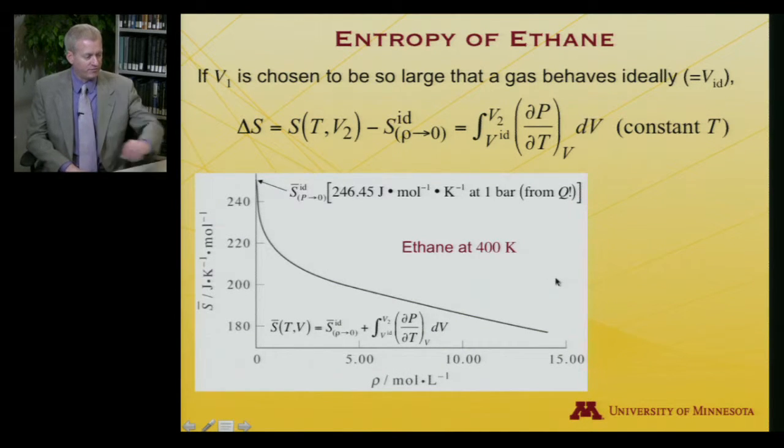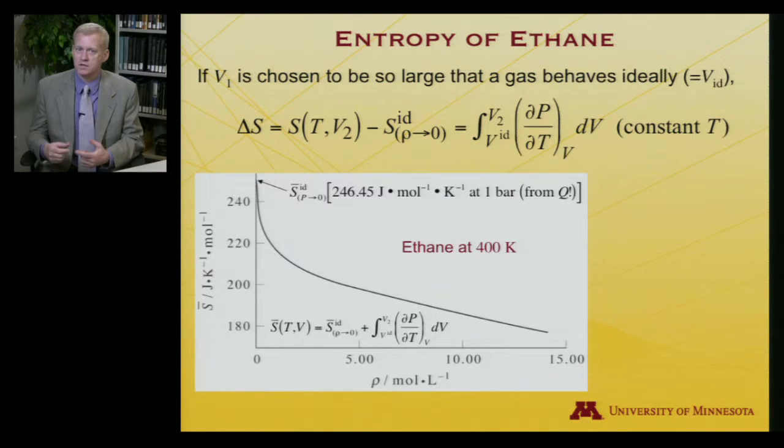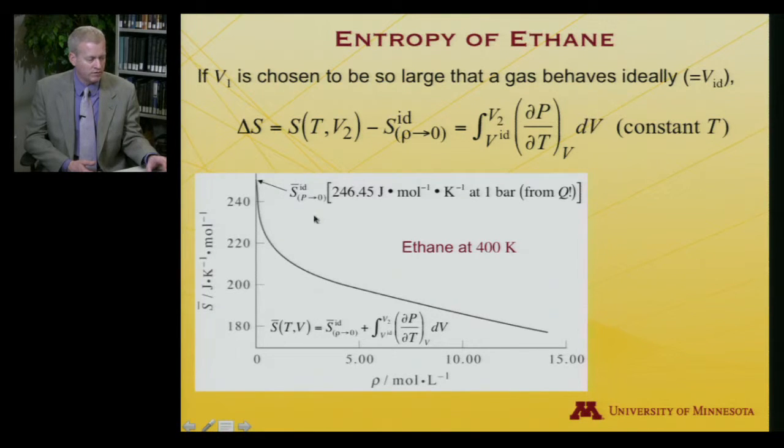And I can plot that effectively. So here I have what is the molar entropy of an ideal gas. And given my gas, if it's behaving ideally, I can do that from the partition function. Remember what I'll need for that. I'll need to know its mass. I'll need to know its moments of inertia. I'll need to know its vibrational frequencies. But with those in hand, I can compute in a spreadsheet what the entropy must be. And so for ethane, for instance, at 400 Kelvin, I would get 246.45 joules per mole Kelvin at one bar.